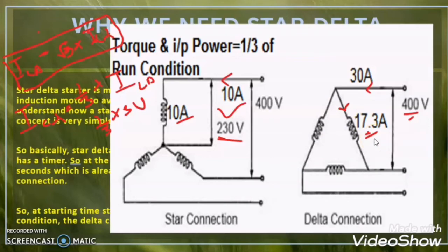So how does the star delta starter technique work? First, the star delta starter converts the motor winding into the star configuration. Once the motor catches its rated speed, the star delta starter changes the motor winding into the delta configuration.